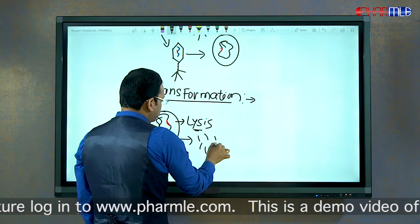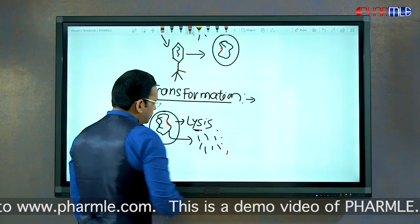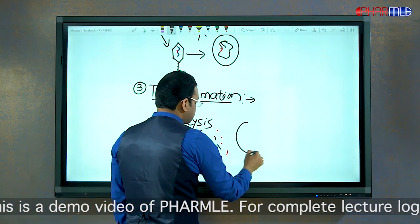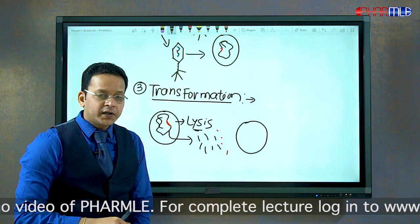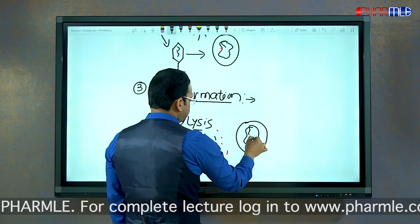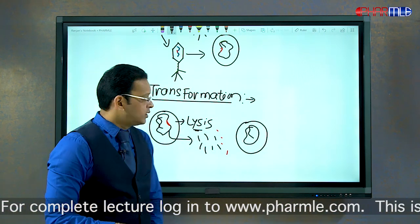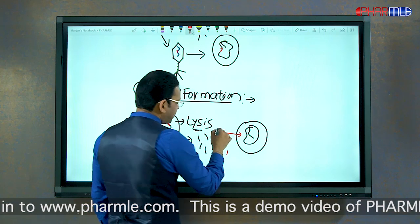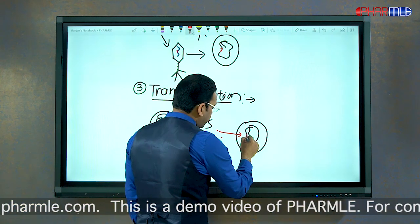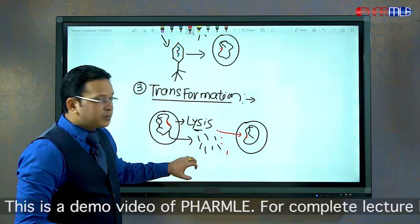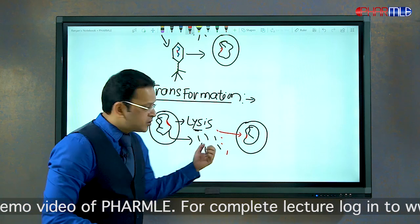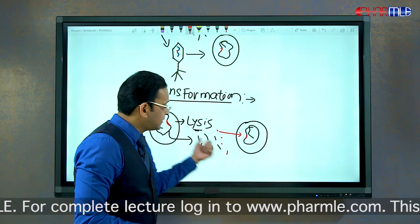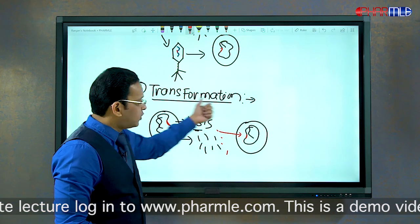When the bacterium undergoes lysis, its genetic material is fragmented into multiple pieces, including the gene containing resistance. There is another nearby bacterium with its own DNA. This bacterium can take the gene of resistance from the surrounding environment and incorporate it into its own DNA. This mechanism — where lysis releases genes that are taken up by other bacteria — is called transformation.